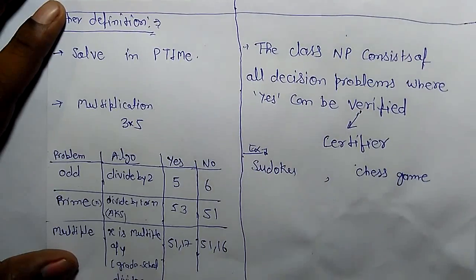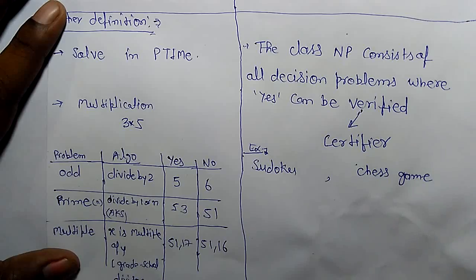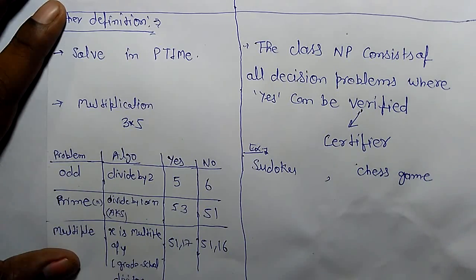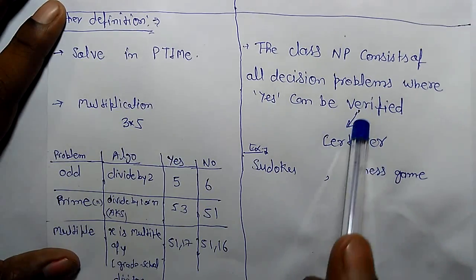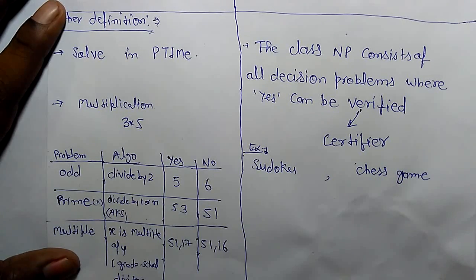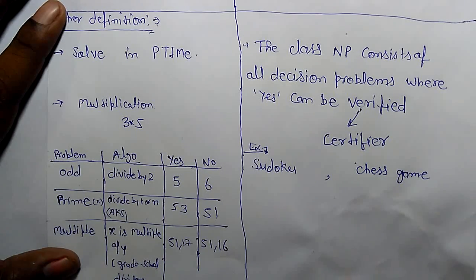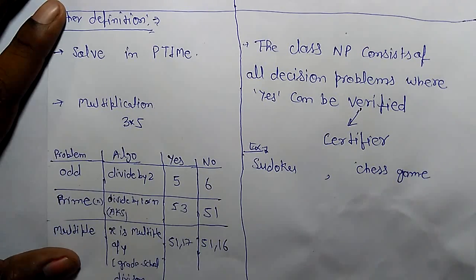The class NP consists of all decision problems where yes can be verified. It means you can solve the problem - yes, it is verified. So what is meant by verified? There is a certifier. It means there is another algorithm that will verify whether your problem is solved or not. And that will take polynomial time to verify this problem.